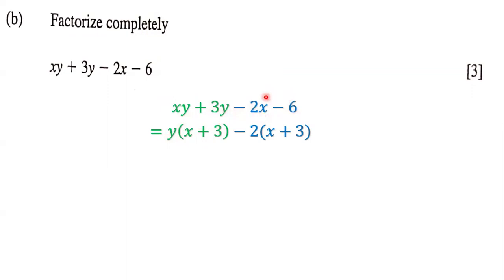When we come to the second expression, we factor out negative 2, and when we factor out negative 2 we are left with x + 3. That's because negative 2 times x is negative 2x and negative 2 times positive 3 is negative 6.